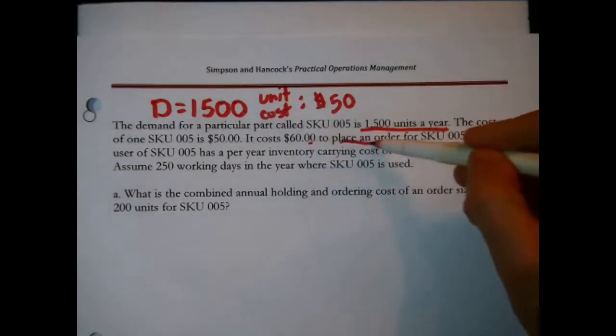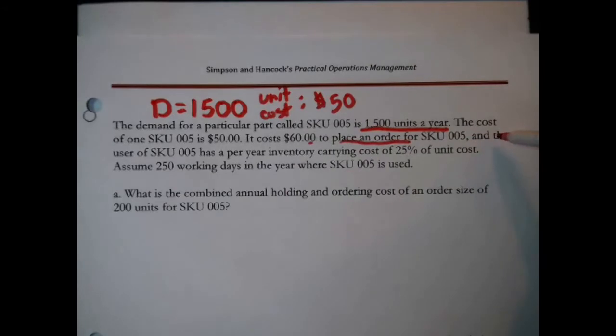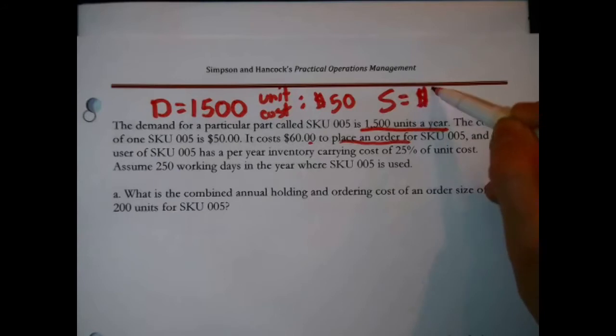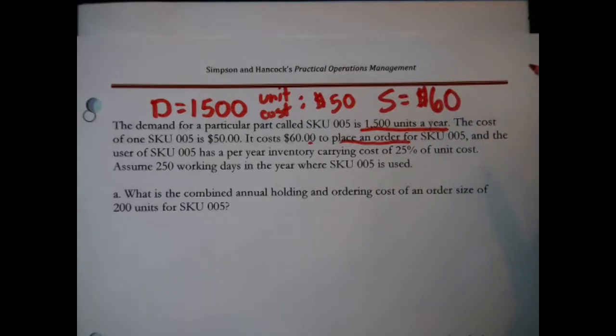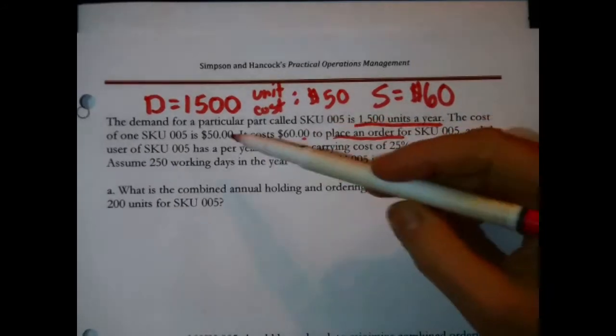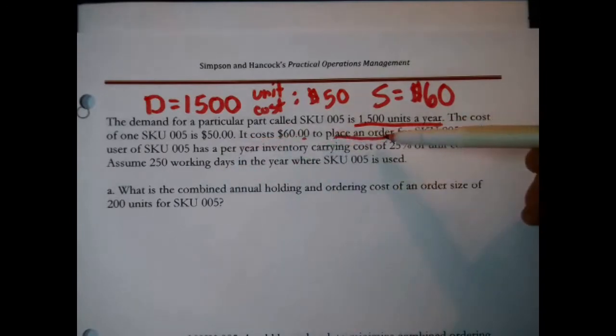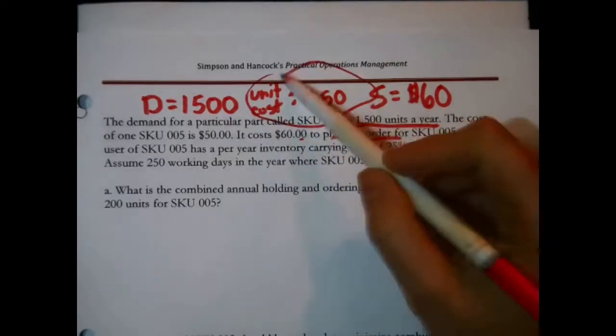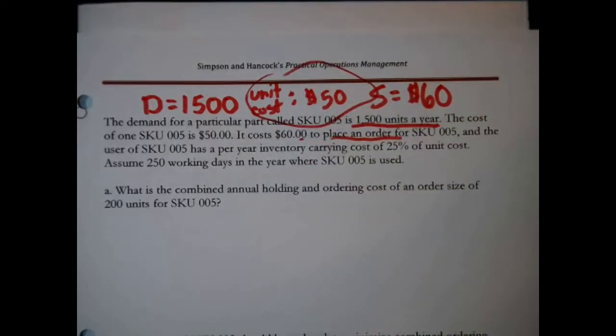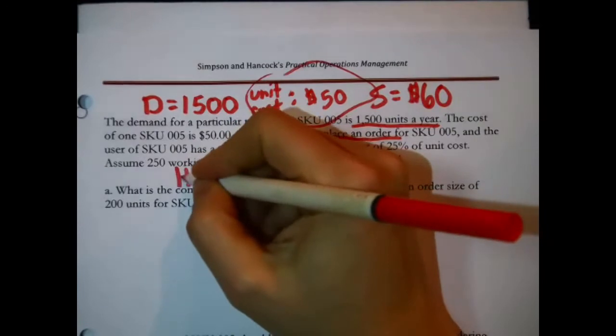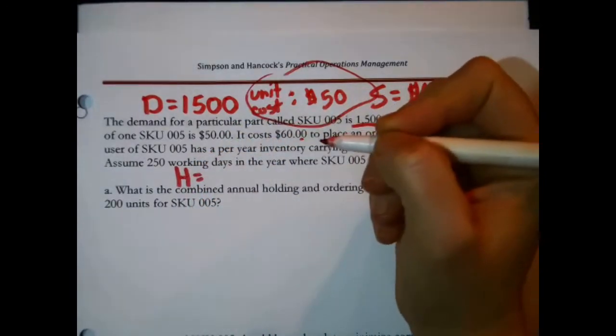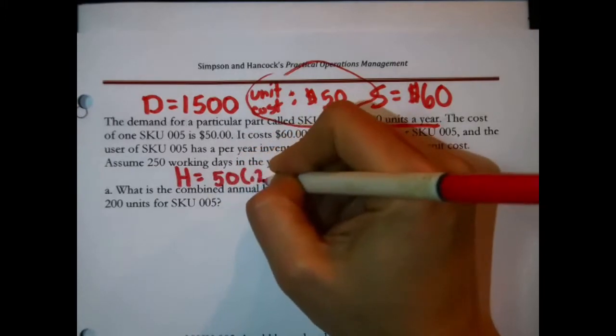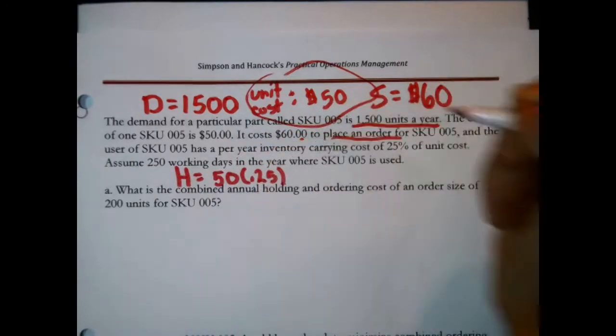It costs $60 to place an order for SKU005, a fixed cost associated with an order. That's capital S. And the user of SKU005 has a per unit inventory carrying cost of 25% of unit cost. I knew there was a reason why we needed the unit cost. That's because H, the cost of holding one unit in inventory for one year is 25% of the purchase cost.